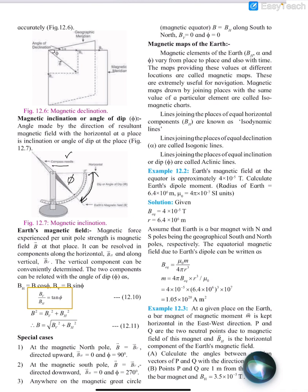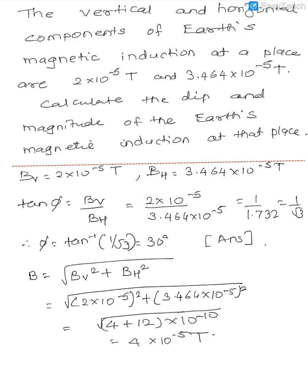Using this concept, we are going to apply the formula and solve two problems on Earth's magnetic field. The first problem: Earth's magnetic induction at a given place, vertical component Bv and horizontal component Bh are given as 2.2 times 10 to the minus 5 tesla and 3.464 times 10 to the minus 5 tesla.